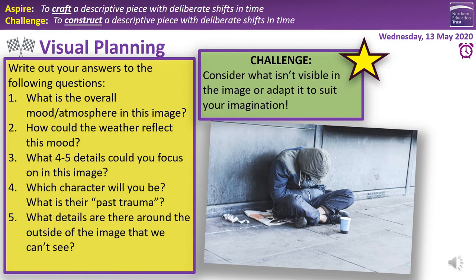For our starter today we're going to visually plan out this piece before we begin writing. There are five questions in the yellow box. Write numbers one to five down the margin of your notebook and answer in full sentences. Question one: what's the overall mood or atmosphere of this image? If you're struggling with words, go back to your vocabulary matrix. Question two: how could the weather reflect the mood? If you've chosen depression, for example, what weather would we associate with that? Be specific.